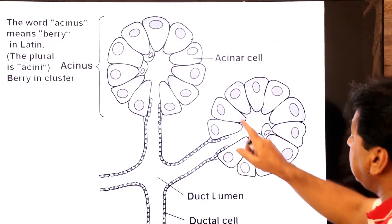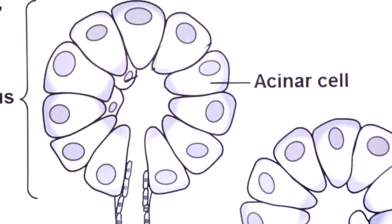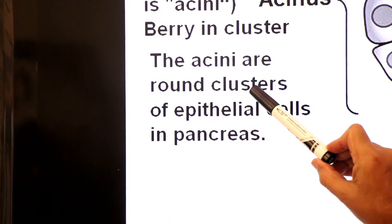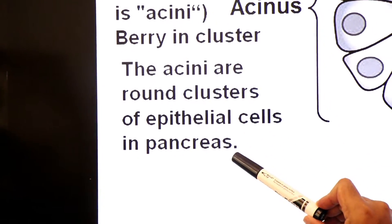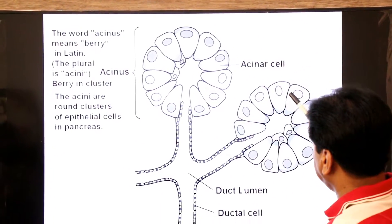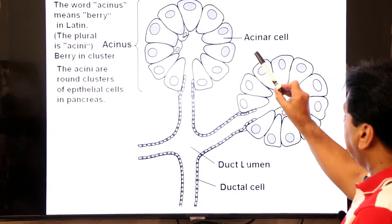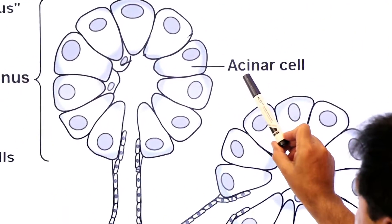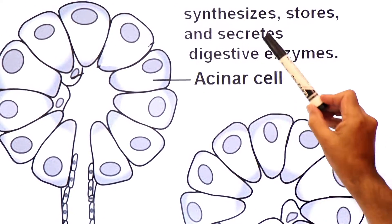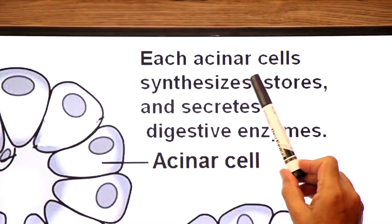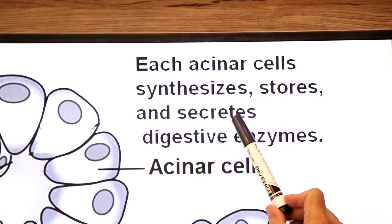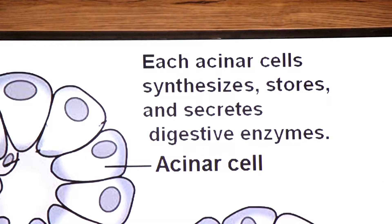The acinar cells are the round clusters of epithelial cells in the pancreas. Here you see a round cluster, and here you see another round cluster — these are the secretory units. Each acinar cell synthesizes, stores, and secretes digestive enzymes.